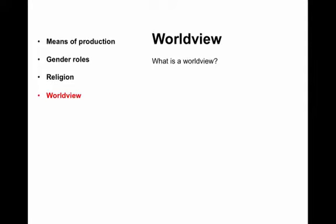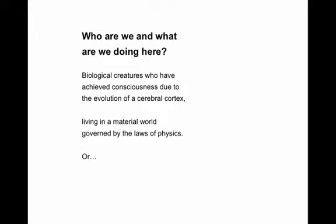And finally, worldview. What is a worldview? There is only one philosophical question — if you take a philosophy course, they'll give you a lot of theory to disguise the fact that the question is very simple: Who are we and what are we doing here? Obviously, we are biological creatures who have achieved consciousness due to the evolution of a cerebral cortex, living in a material world governed by the laws of physics. How many people believe that? Five materialists.